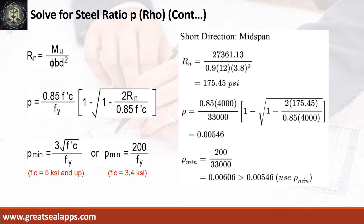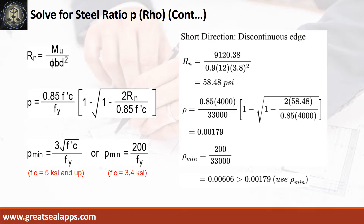Use ROE minimum of 0.00606 for mid-span. Short direction, discontinuous edge: moment equals 9,120.38 inch-pounds, resistance factor 0.9, b equals 12 inches, d equals 3.8 inches. Beam design ratio RN equals 58.48 PSI, reinforcement ratio ROE equals 0.00179. Use ROE minimum of 0.00606.